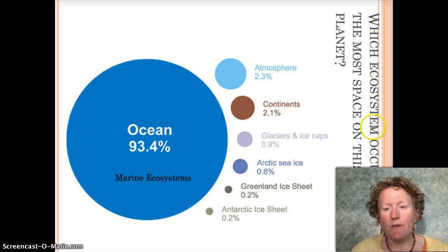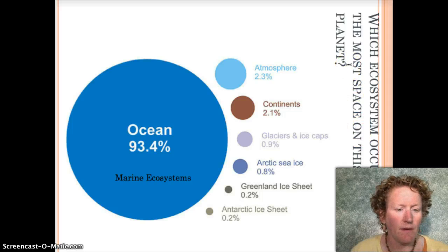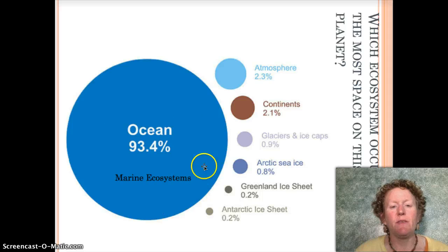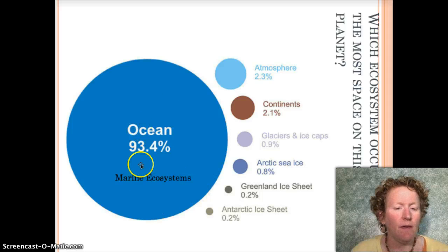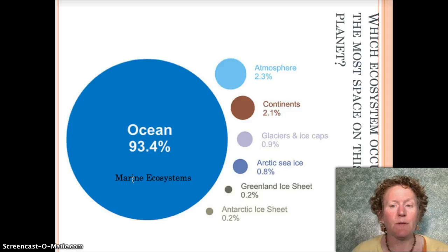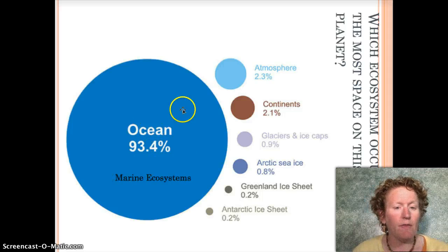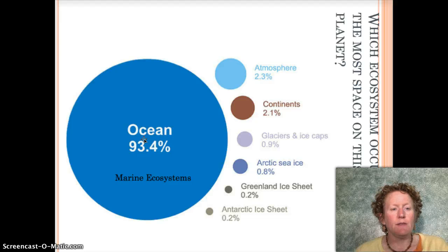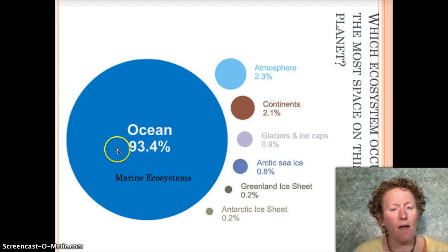Which ecosystem occupies the most space on this planet? If you guessed the big blue dot — the ocean ecosystems, or marine ecosystems — you're absolutely correct. The biggest chunk of water on the planet is in the ocean, and water is life for organisms, so a lot of life goes on in the ocean.